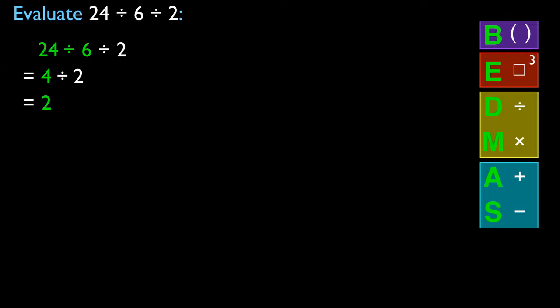There is one circumstance where you would perform the right division first — if you had brackets around it. Brackets around the 6 divided by 2 would tell you to perform that division first, making the correct answer 8 in that case. The key point is: perform division and multiplication left to right, and addition and subtraction left to right.